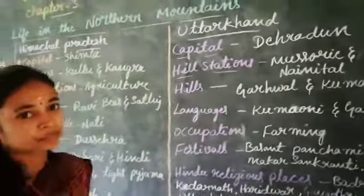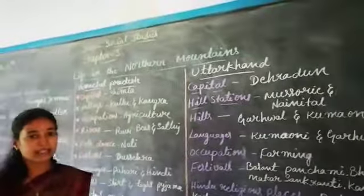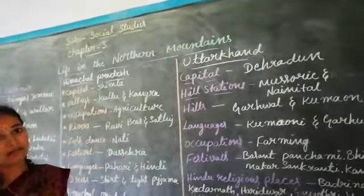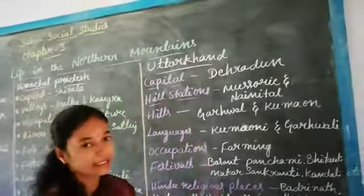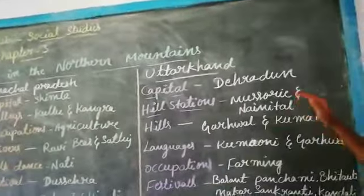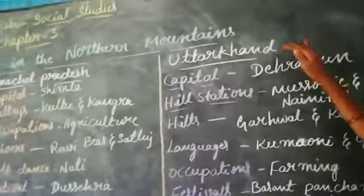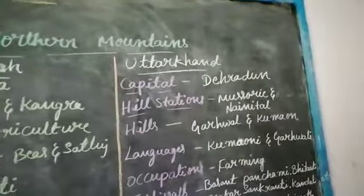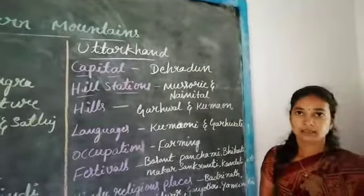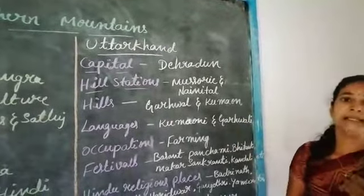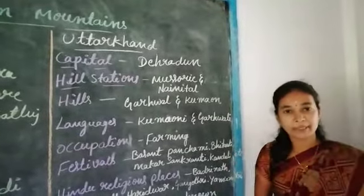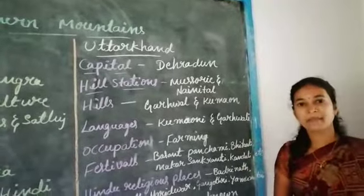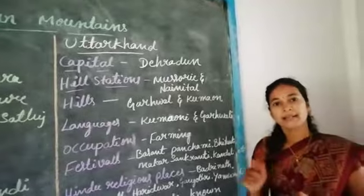Next we discuss about Uttarakhand. Uttarakhand was formed on November 9, 2000, when it was separated from Uttar Pradesh. The capital of Uttarakhand is Dehradun.